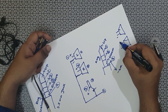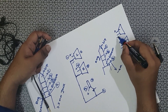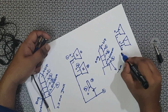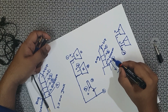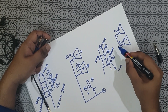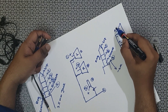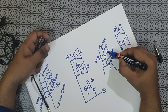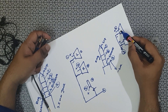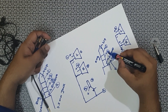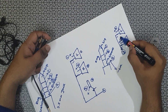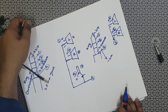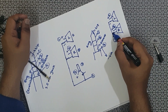All the negatives are connected as one connection to the sleeve — the third segment. The positive of the left speaker is connected to the first segment, and the positive of the right speaker is connected to the second segment.